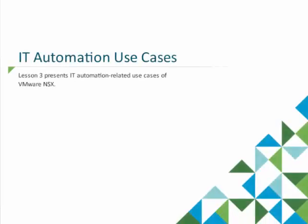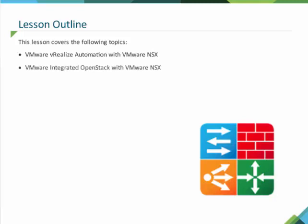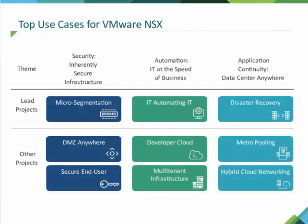Lesson 3 presents IT automation-related use cases of VMware NSX. This lesson covers the following topics: VMware vRealize Automation with VMware NSX, VMware Integrated OpenStack with VMware NSX, and VMware vCloud Director with VMware NSX. In the IT automation category of use cases, we will first look at the lead project called IT Automating IT, then developer cloud and multi-tenant infrastructure use cases.